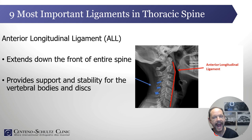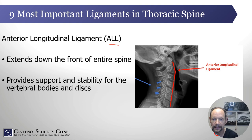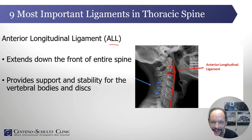Then there's the anterior longitudinal ligament — such an important ligament in the thoracic spine and throughout the spine. Sometimes we use the abbreviation ALL. It extends from C1 all the way down to the sacrum, a very important one. You can see it here depicted in red. It basically is the piece of duct tape on the front side of the spine, providing support and stability for both the vertebral bodies as well as the discs that sit in between them.